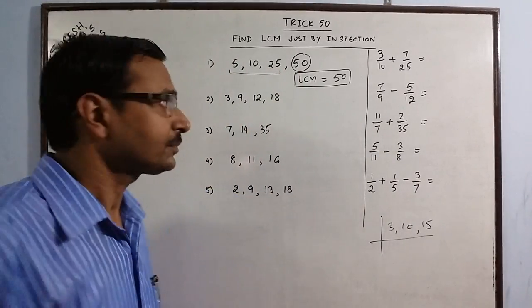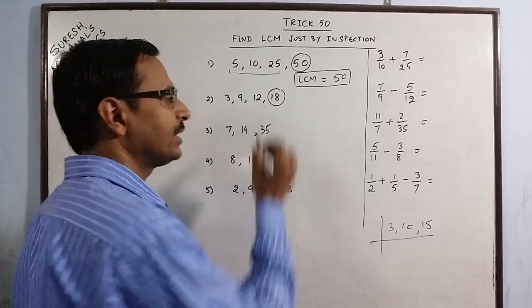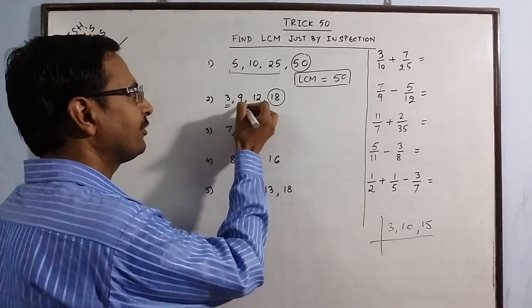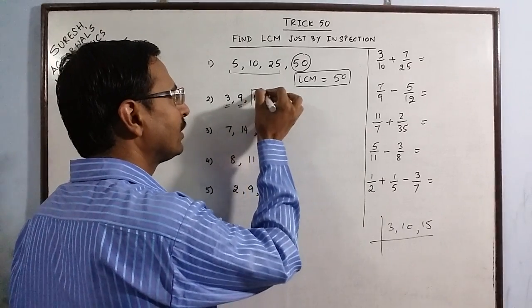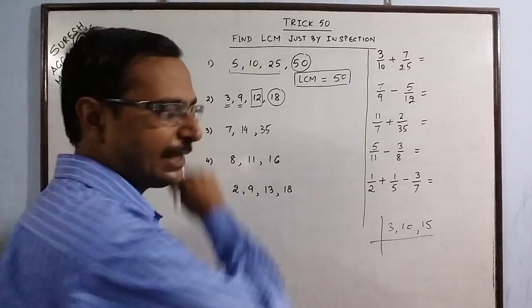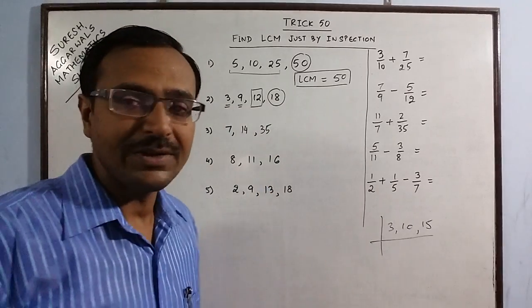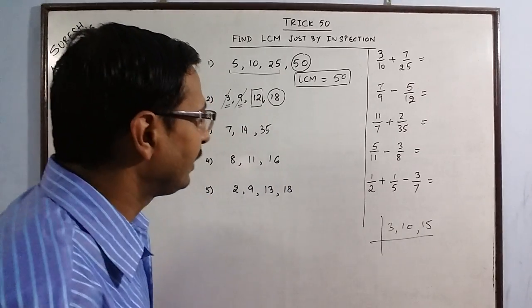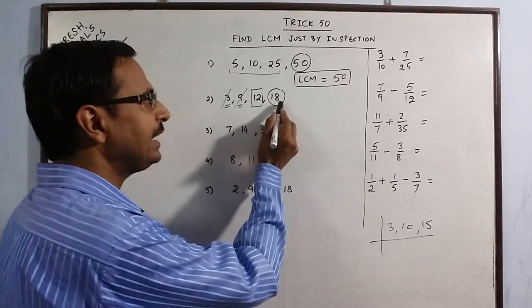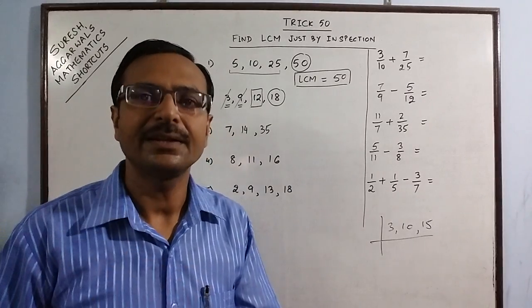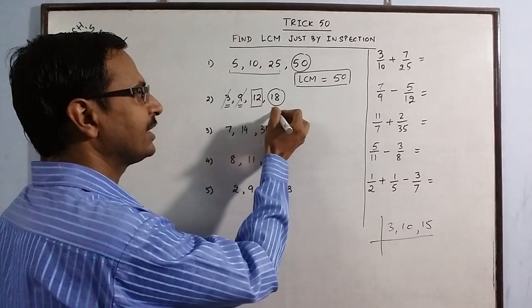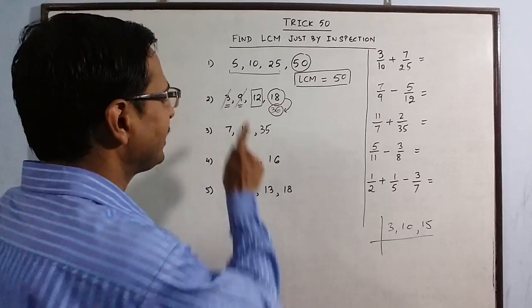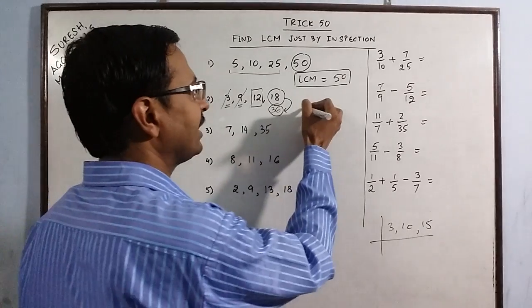Now for the second condition. In this problem, 18 is the highest number. Although 3 and 9 are divisors of 18, the number 12 is not a factor of 18 — 18 does not appear in the table of 12. So we eliminate 3 and 9 since they divide 18, and then we check the next multiple of 18: 18 twos are 36. Now check whether 36 is divisible by 12 — yes, 12 threes are 36. So the LCM is 36.